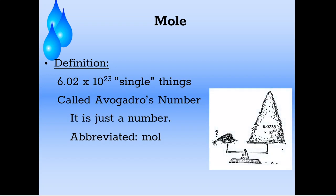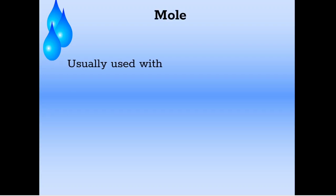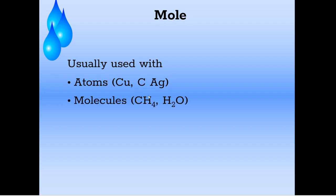More precisely it's 6.0235 times 10 to the 23rd. Here in chemistry we use it for atoms most of the time — like copper, carbon, silver — and also molecules like methane or water. We could say one mole of methane or one mole of water, and that would be 6.02 times 10 to the 23rd molecules of water or methane, or atoms of copper or carbon.